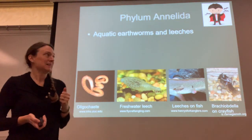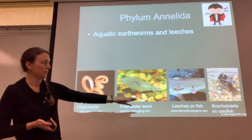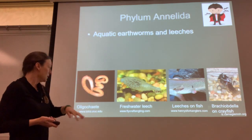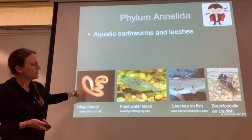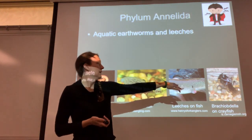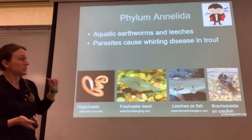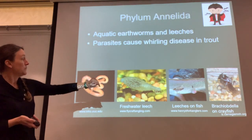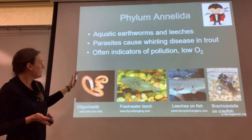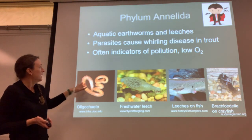Moving on to the phylum Annelida — aquatic earthworms and leeches, some vampire-like things like leeches on fish. Here's a leech carrying its babies around. We also have aquatic earthworms like oligochaetes, and some of these oligochaetes like to attach themselves and feed as parasites off crayfish. Some of these parasites cause whirling disease in trout, and if you have a stream with a ton of oligochaetes, it tends to indicate pollution and low levels of oxygen in the water.